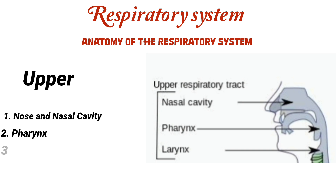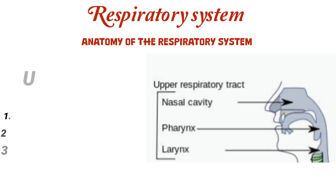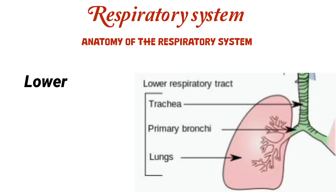We also have the larynx, which is known as the voice box. The larynx is located below the pharynx. It contains the vocal cords, which produce sounds as air passes through them. It also has the epiglottis, which is a flap of cartilage at the top of the larynx that closes the airway during swallowing to prevent food and liquids from entering the lungs.